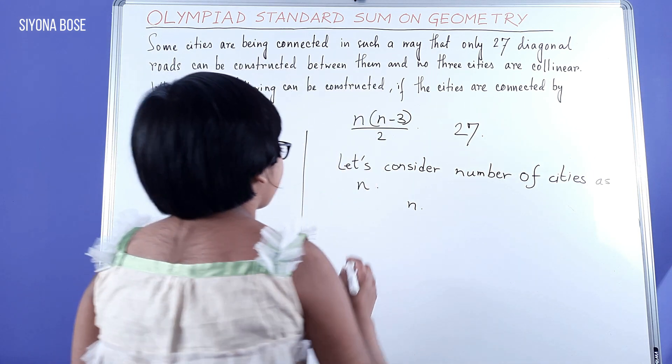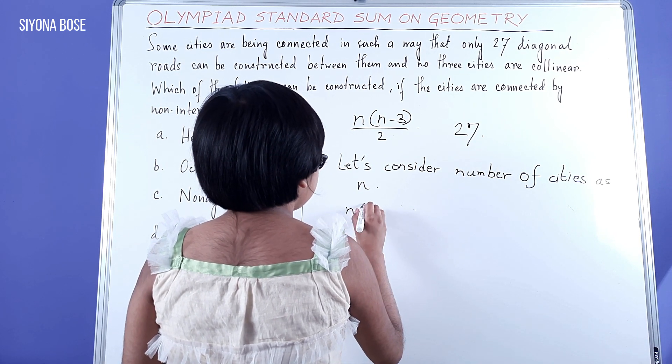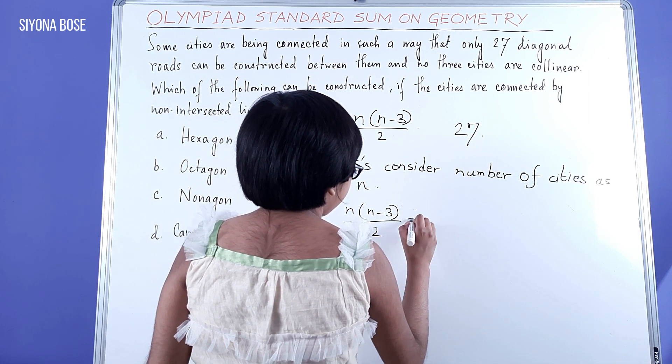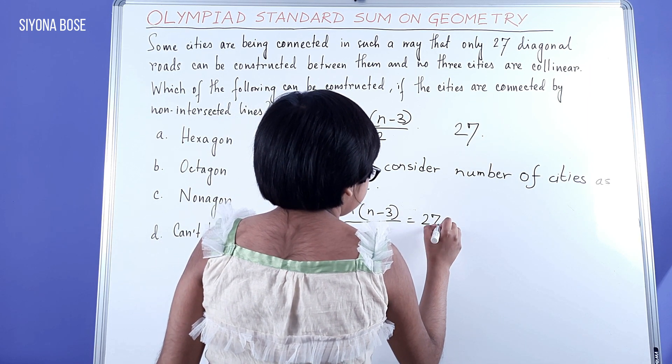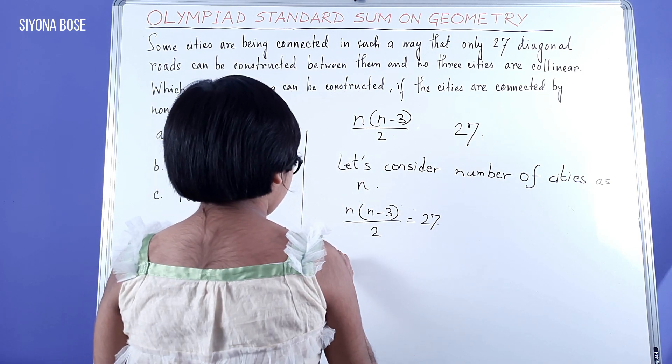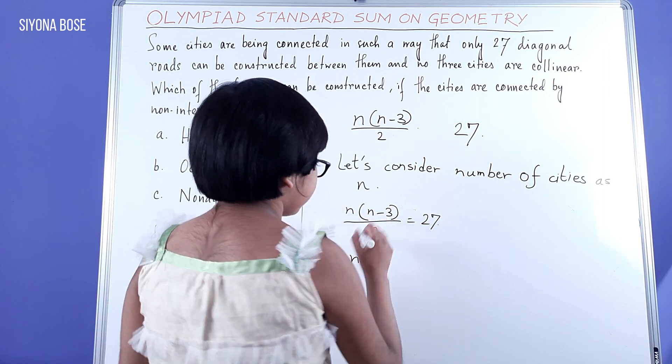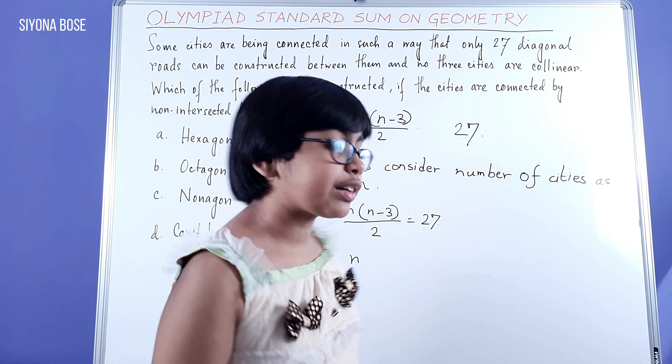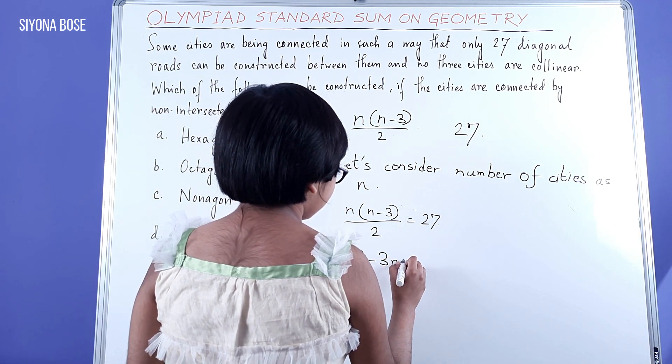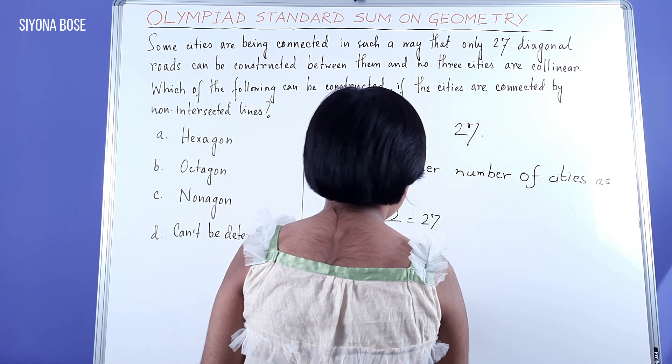So our equation is n into n minus 3, the whole by 2, equal to 27. Let's do this. Or, we can multiply the 2 on this side, and we can do a distributive law over here, n squared minus 3n equal to 54. 27 into 2 is 54.